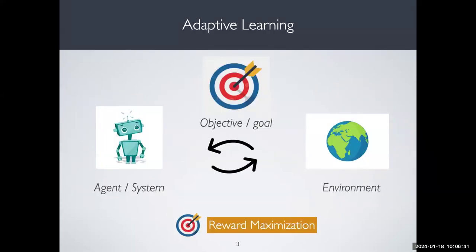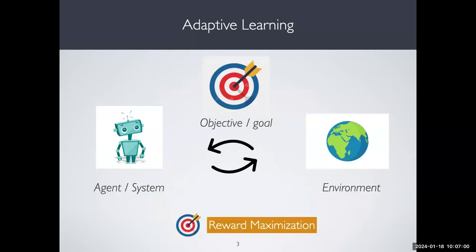I'll talk about what I call adaptive learning. This is a scenario different from supervised learning, where you have an agent or system interacting sequentially with the world. The agent may not know everything about the world in advance, so it has to simultaneously learn about it and make decisions. Usually in these scenarios, you care about making decisions, learning about the world, and maximizing a reward function.